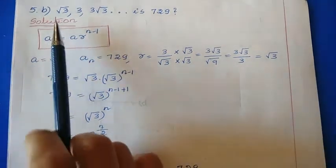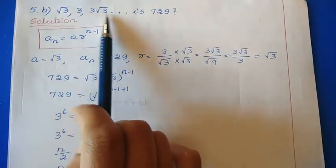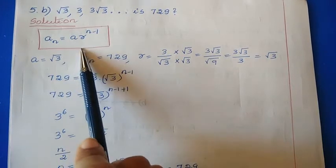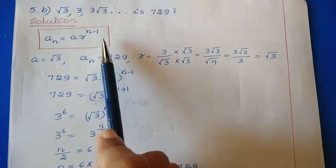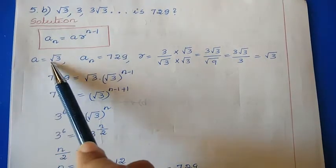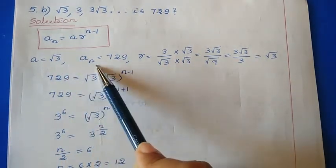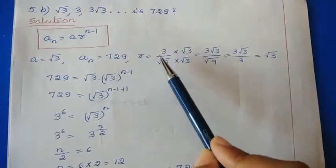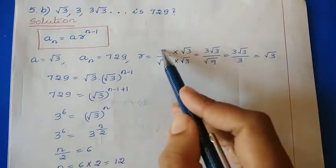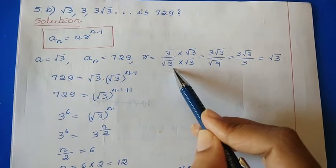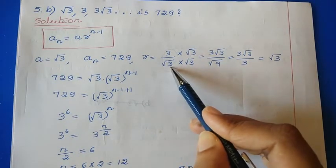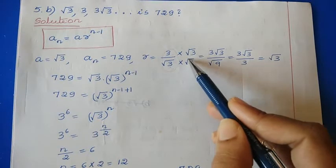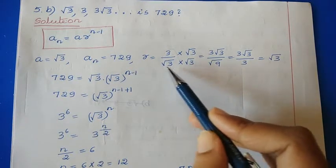The sequence given is √3, 3, 3√3, and the last term is 729. We use the formula aₙ = a·r^(n-1). Here a = √3, aₙ = 729, and for r we compute 3 ÷ √3. Since we have √3 in the denominator, we rationalize by multiplying numerator and denominator by √3.